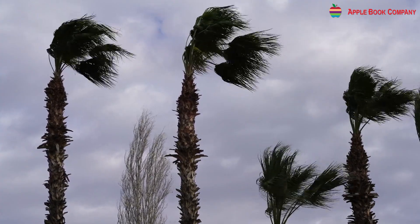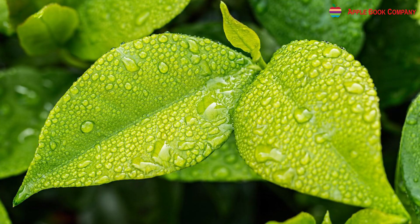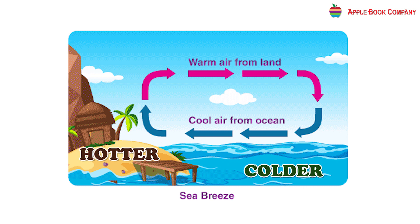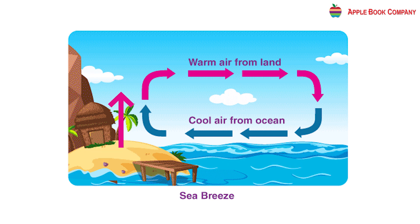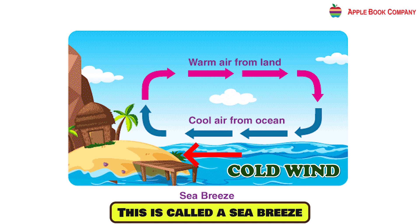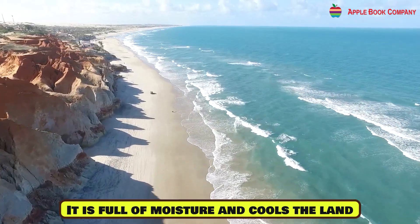The temperature of a place and the winds that blow there are closely related. Winds blow from cool places to hot places and transport heat and moisture. During the day, land becomes hotter than the sea. The wind above the land also gets hot, and hot air becomes lighter and rises. Cold wind from the sea then blows towards the land. This is called a sea breeze, and it is full of moisture and cools the land.